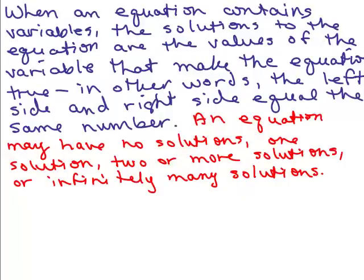When an equation contains variables, the solutions are the values of the variables that make the equation true — in other words, the left side and right side equal the same number once you plug in those values. An equation might have no solutions at all, one solution, two, three, or four solutions, or it might have infinitely many solutions.